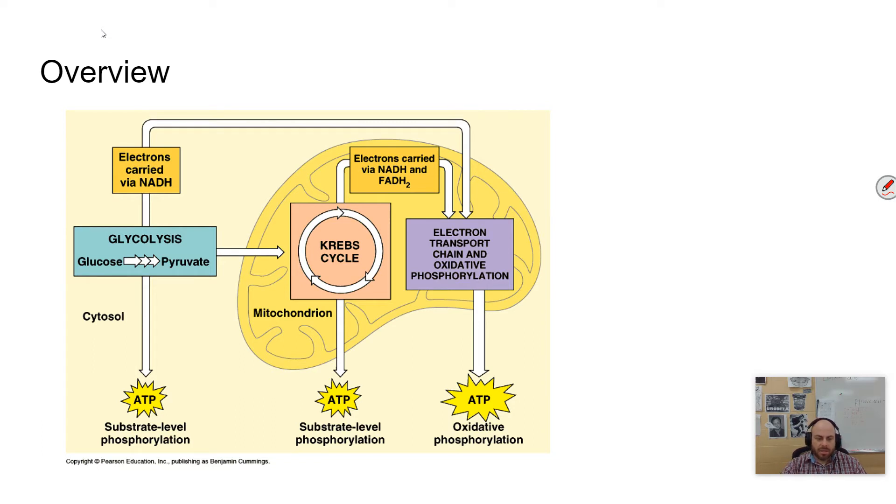And so you can see the different steps here. In glycolysis, you have the breaking down of glucose to create pyruvate. And this occurs in the cytoplasm of organisms. There's some ATP being made in this process. And there are some electron carriers, which we'll talk about as well.